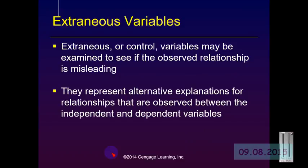We will talk about other types of variables that may be of interest to our study. These are sometimes called extraneous variables, sometimes called control variables. They are variables that are put into place to see if an observed relationship is misleading in some way. They represent alternative explanations for relationships that are observed between independent and dependent variables.